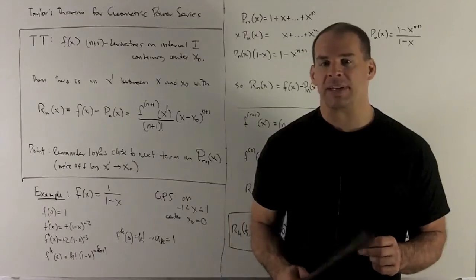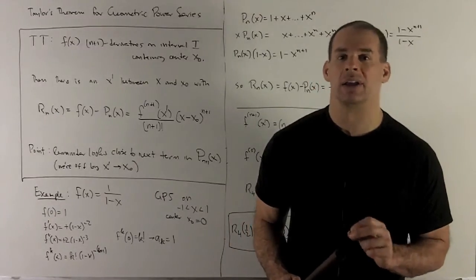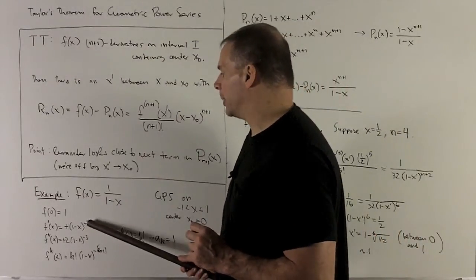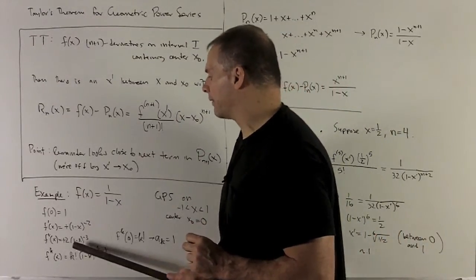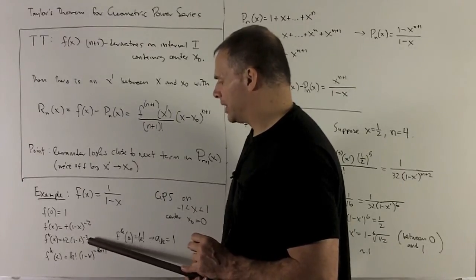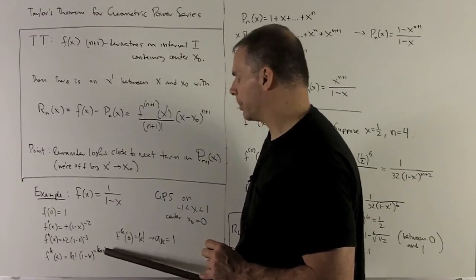We'll get a minus coming down from the exponent, and then chain rule on the inside brings another minus out, so it's always going to stay positive. And then you notice the pattern is going to be exponents keep accumulating out in front to give us k factorial, and then if we take the exponent that goes with k, that's going to be minus k plus 1.